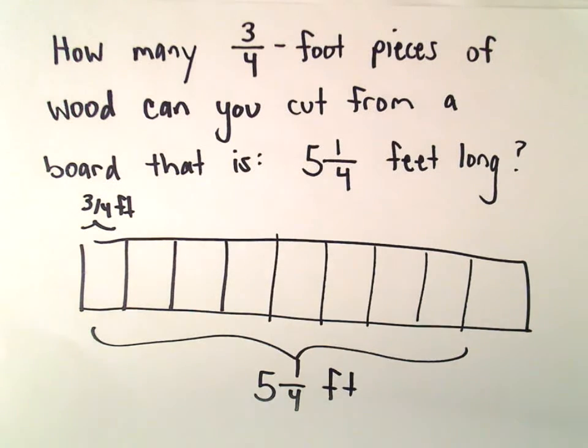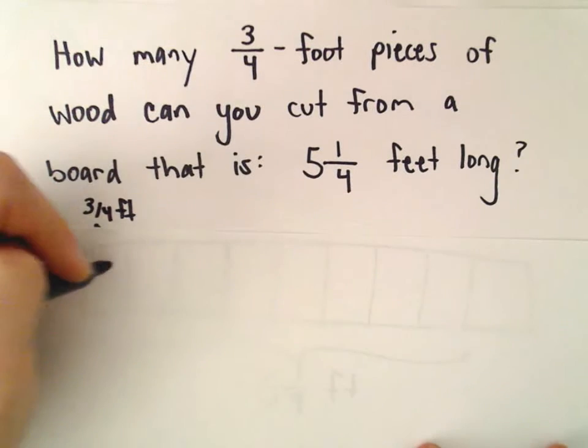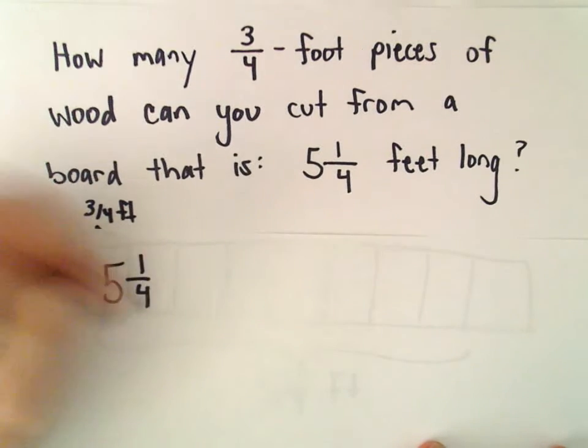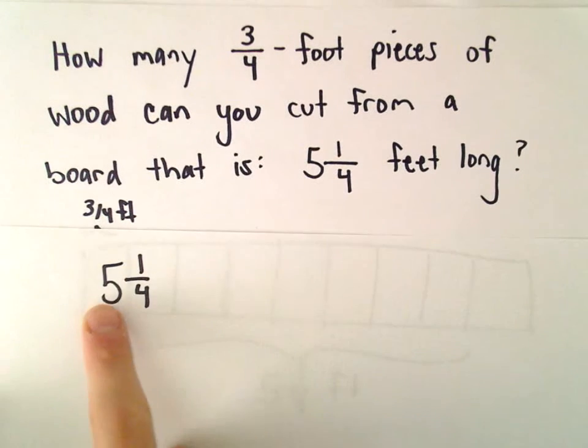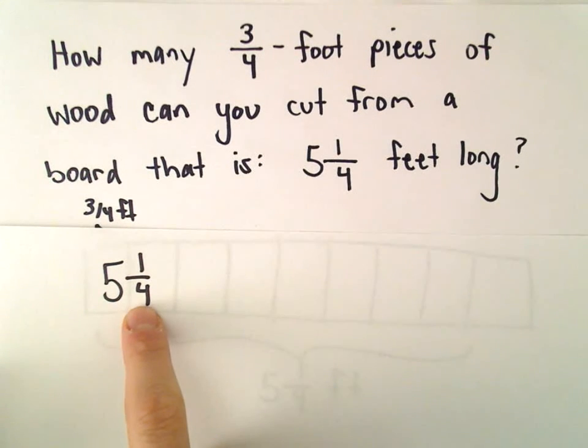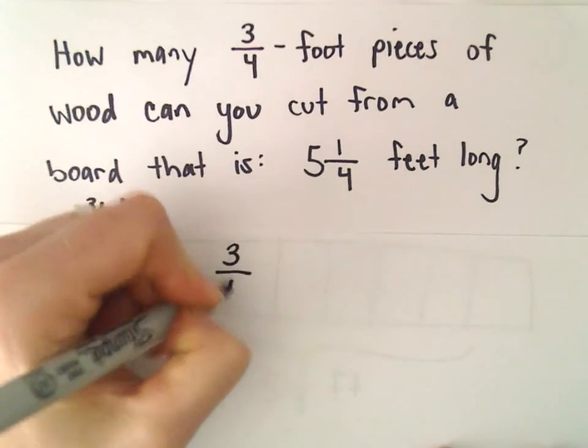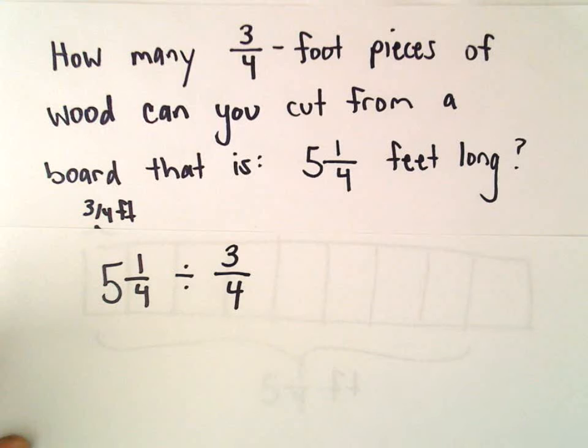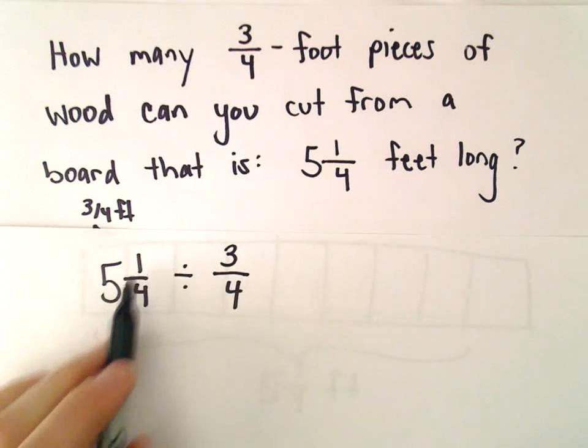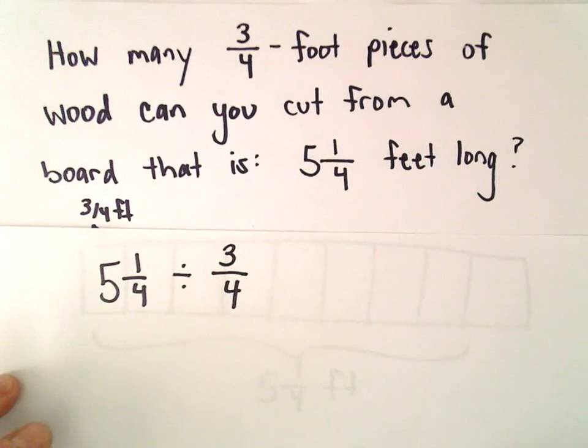Well, what we're doing is we're taking our piece of wood that's five and one-fourth feet long. And we're going to divide it into pieces that are three-fourths of a foot long each. So that's what we have to do. We've got to take the five and one-fourths and divide it by three-fourths.